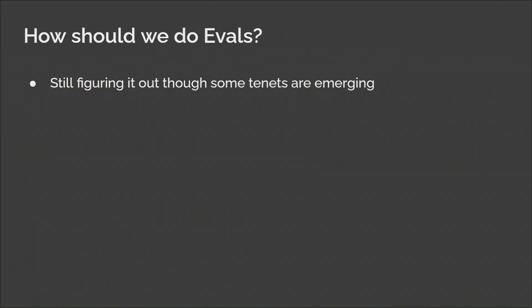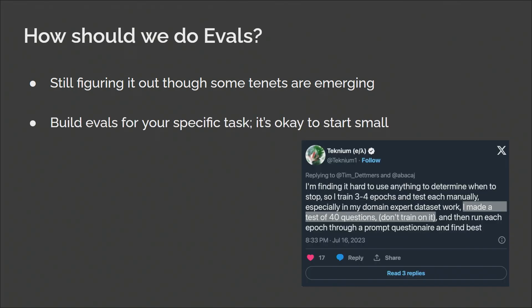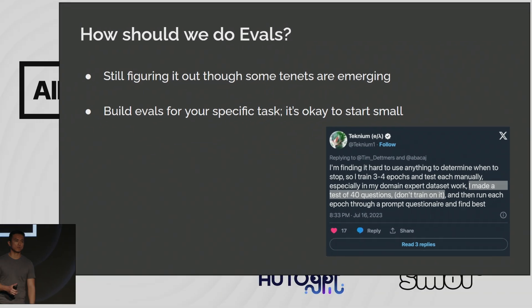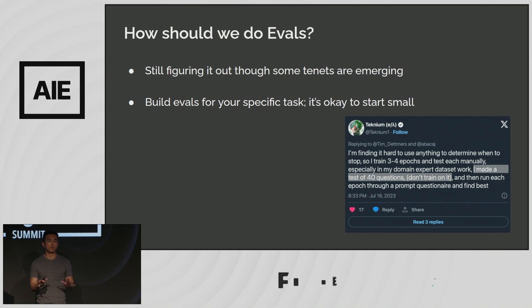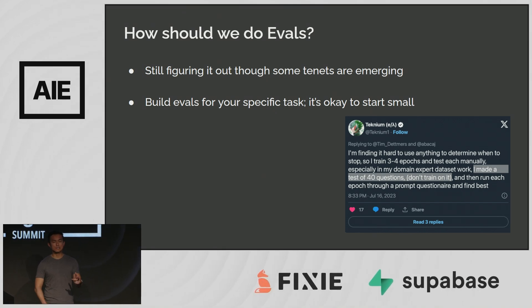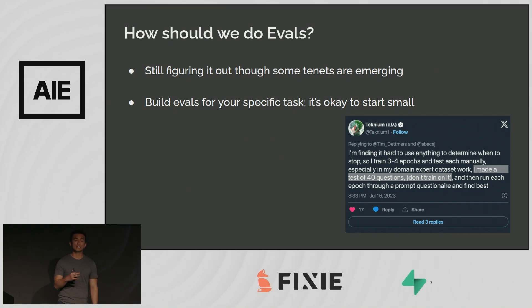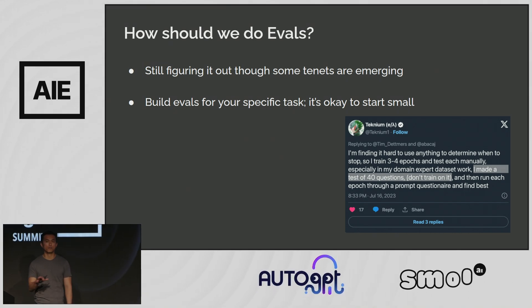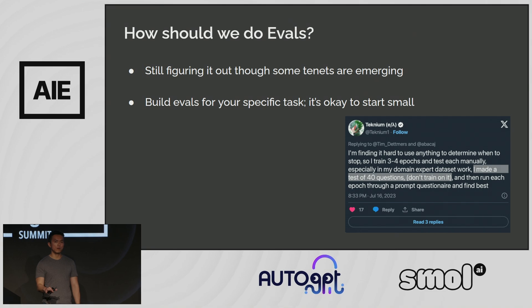So how do we do evals? As an industry, we're still figuring it out. It's the number one challenge out there. I think there are some tenets emerging. Firstly, we should build evals for our specific task, and it's okay to start small. It may seem daunting, but it's okay to start small. Technium, who releases a lot of open-source models, starts with an eval set of 40 questions for his domain expert task. 40 evals — that's all it takes, and it can go very far.